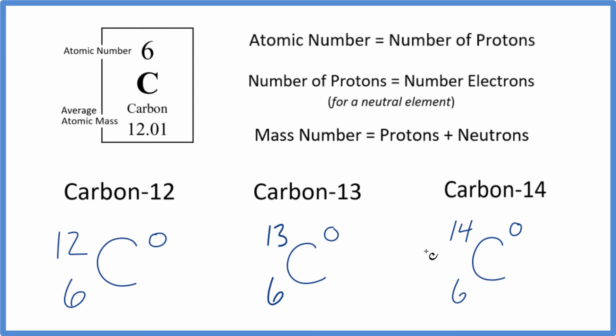So this is how we write the nuclear notation for these isotopes of carbon here. We don't write the number of neutrons in this notation because we can figure that out. We know the mass number here. We know the number of protons. That's the atomic number. So we can just figure out the neutrons if we need to know that information.